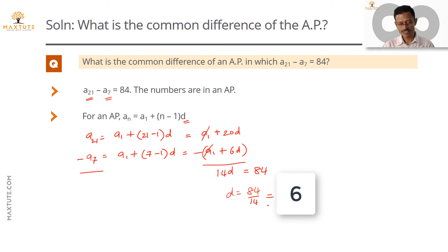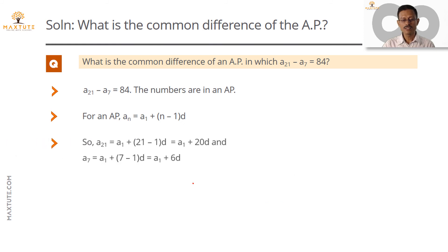Quickly recap the entire thing in a printed form. A21 is equal to A1 plus 20d. A7 is equal to A1 plus 6d. So A21 minus A7, this part is equal to A21, and this entire thing is equal to A7. This is equal to 84.